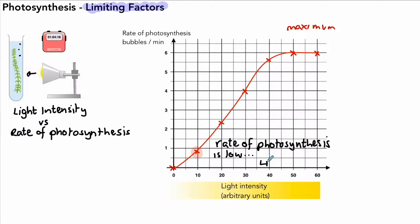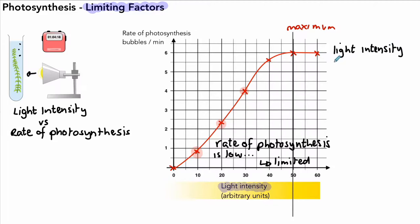The rate of photosynthesis is limited at that point. How can we increase it? If we increase the light intensity up to 20 units, we get an increase in the rate of photosynthesis — it's less limited than before. As we increase light intensity, we get a higher and higher rate of photosynthesis until we reach the maximum. Beyond that point, increasing light intensity will not produce a faster rate, so light intensity is no longer the limiting factor.